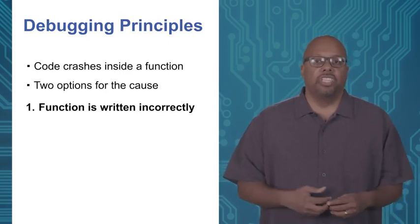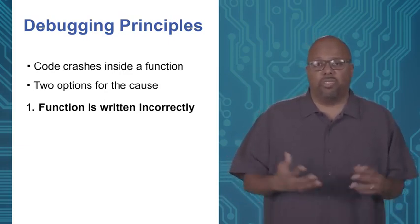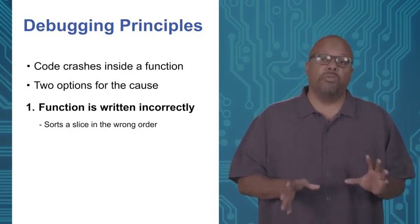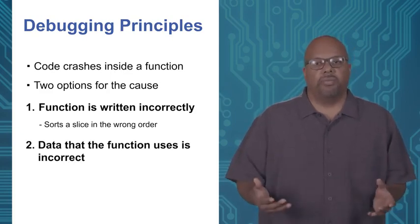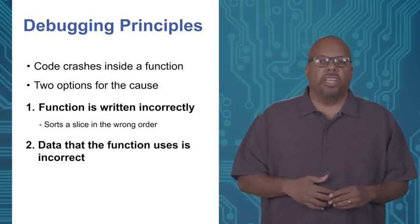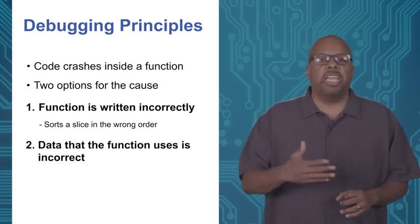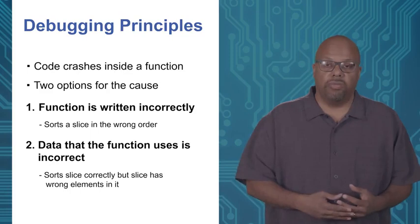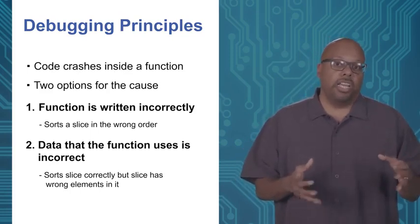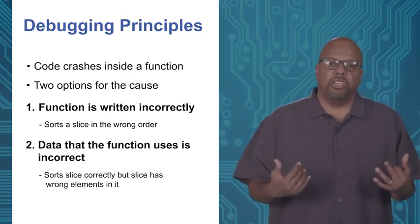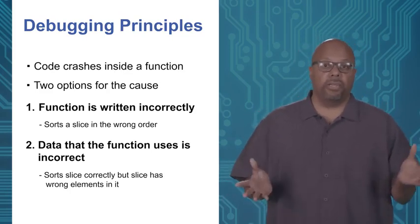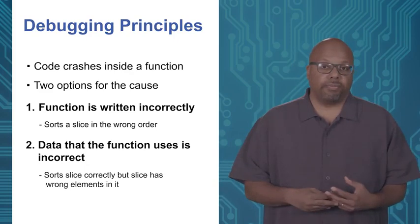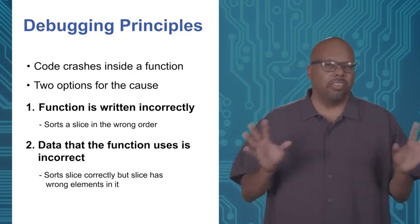Maybe the function sorts the slice just fine, but the slice has wrong data in it. Somehow the data it got was wrong, so the result is going to be wrong because the original data was wrong. So the function could be messed up, or its inputs could be messed up. Its inputs can come from parameters, or maybe from a file or some user input. In order to support debugging, when you run into a bug, the first thing you've got to be able to do is understand your own function — look through the code and manually determine whether it's doing what you think it's doing.